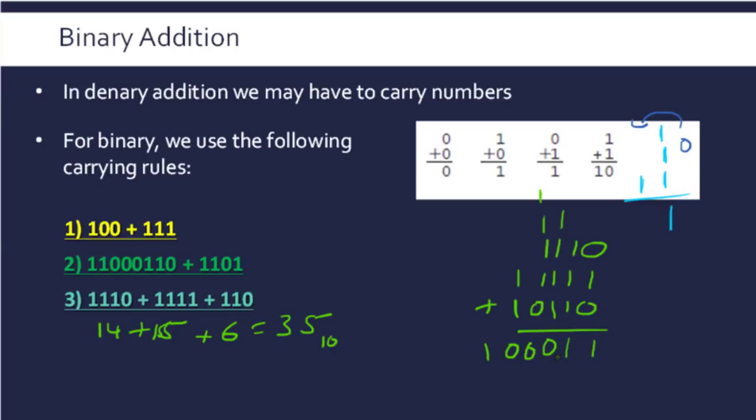So to check this, this is the 32 column and this is the 2 and 1 column. So 32 plus 2 plus 1 is 35 so we have got the correct answer even if it's not a very fun way to do it.